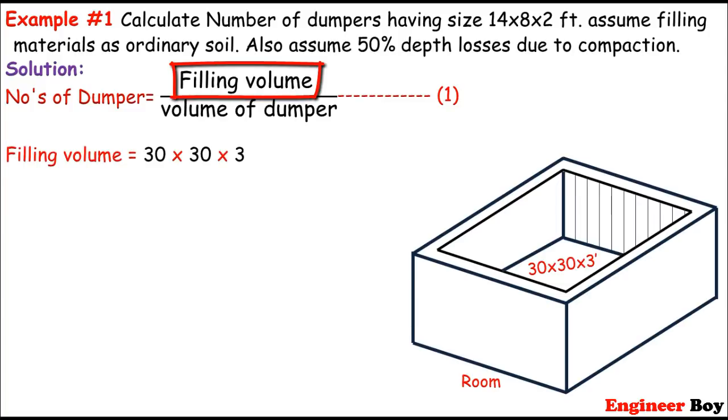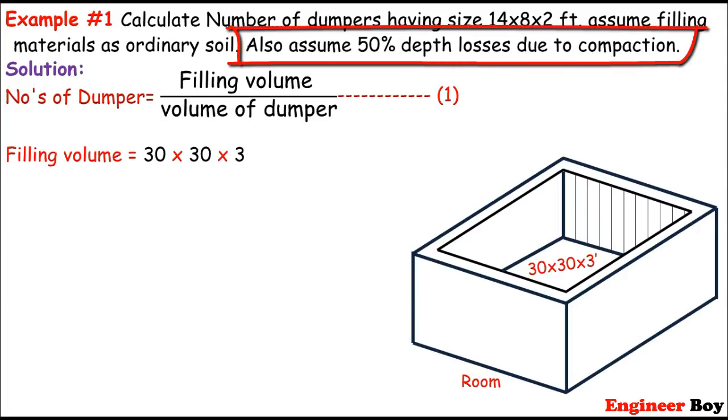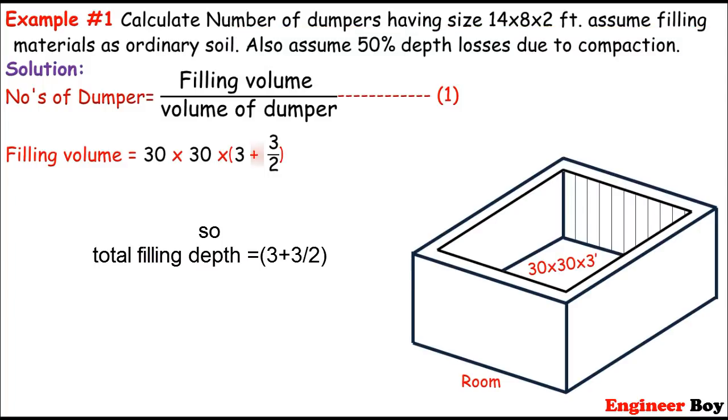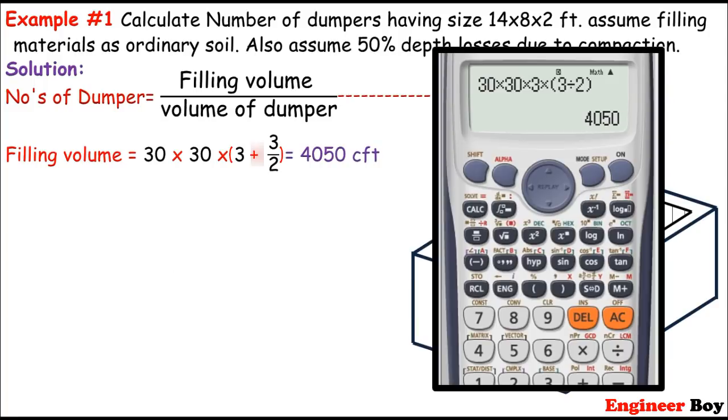And for this equation, let me just calculate the filling volume first. You can see this is already known, which is the size of inside room 30 times 30 times 3 feet. But this is not the full filling volume. This may be the compacted volume over here. If you see in the example terms, we are informed to assume 50 percent depth losses due to compaction. This means the depth should be increased half because we are losing the half depth due to compaction. So this must be the filling volume, which is 4050 cubic feet.